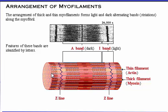Each I-band is bisected by a zigzag line called the Z-line. The Z-line is actually a protein disc which anchors the thin filaments and connects adjacent myofibrils. In the middle of each A-band, a lighter stripe appears called the H-zone, corresponding to the region between the thin filaments. The width of the H-zone varies depending on the degree of muscle contraction — it is widest when the muscle is relaxed and stretched. The M-line, located in the center of the H-zone, consists of protein fibers that connect neighboring thick filaments.